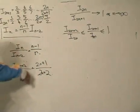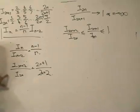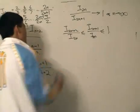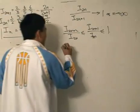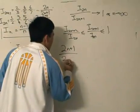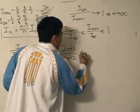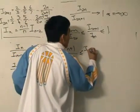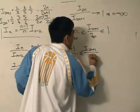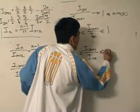So this is equal to this using our reduction formula. Now I can bring this over back here and write it as (2n+1)/(2n+2) is less than or equal to i_(2n+1). i_(2n) is less than or equal to 1.